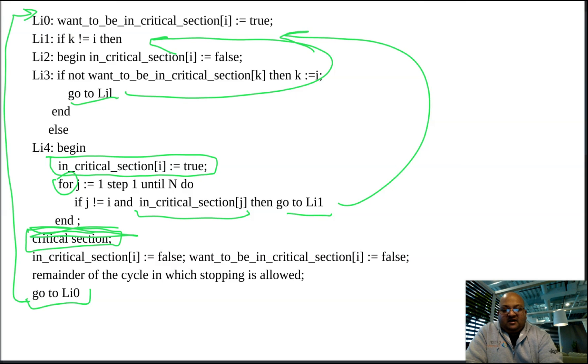So the only way you could have come into the critical section is if in critical section of I, that is my flag, is true, and it's false for everyone else. So mutual exclusion works with this piece of code.